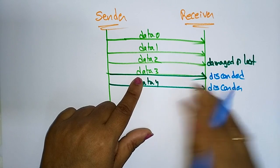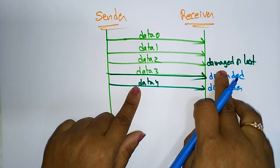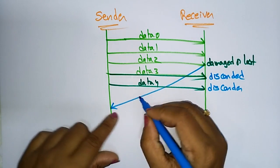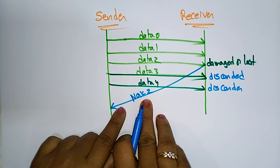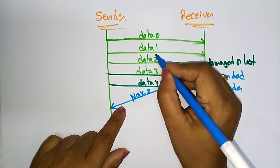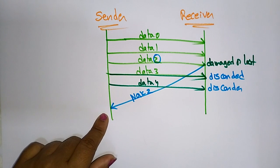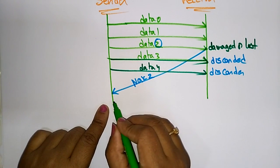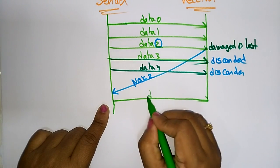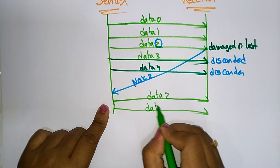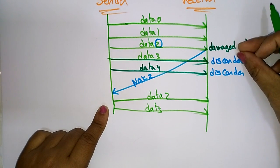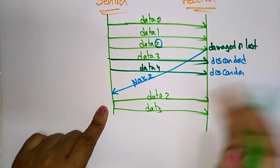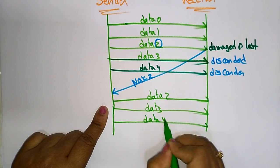Whenever Data 2 is damaged or lost, the receiver will not accept Data 3 and Data 4 — they are discarded. The receiver sends a negative acknowledgement for Data 2. The sender then understands that Data 2 was not received and retransmits Data 2, Data 3, and Data 4, because whatever was sent after the damaged frame is also discarded and must be sent again.